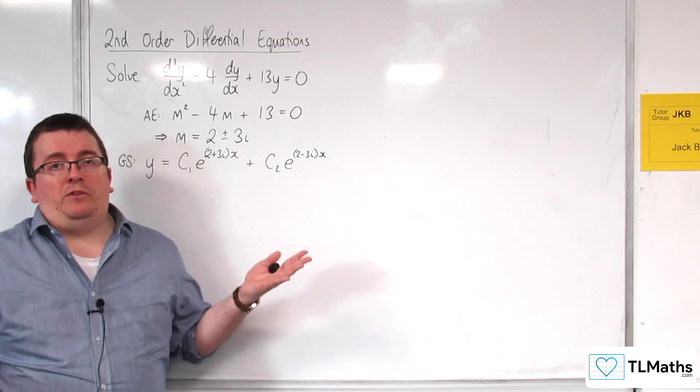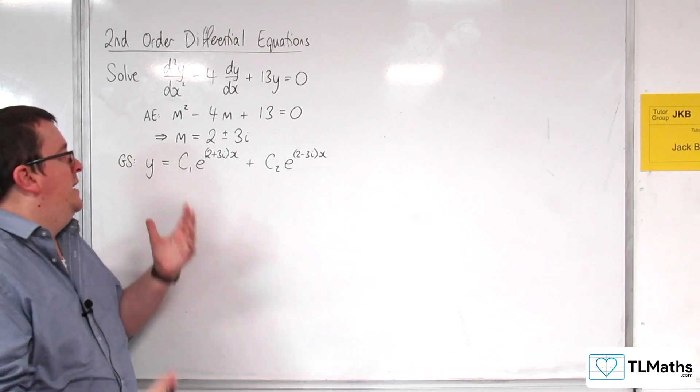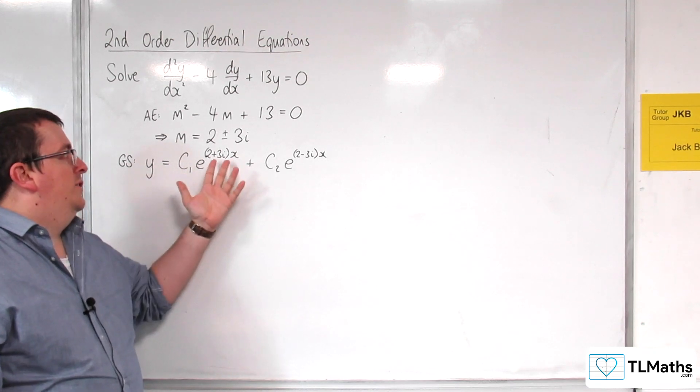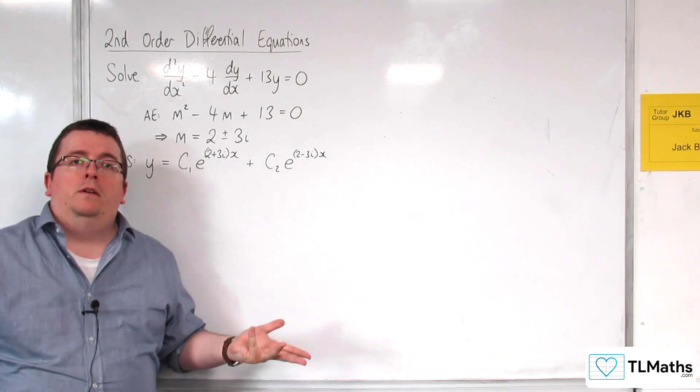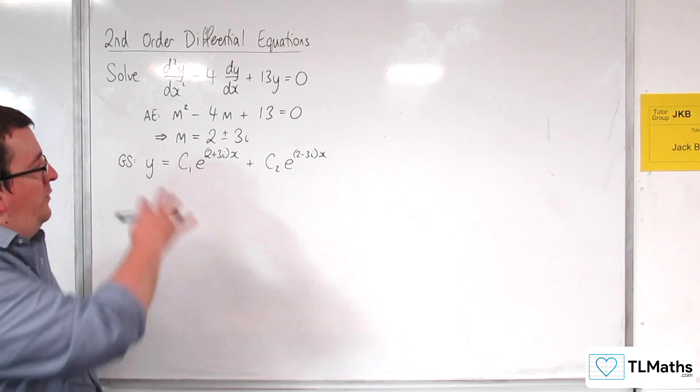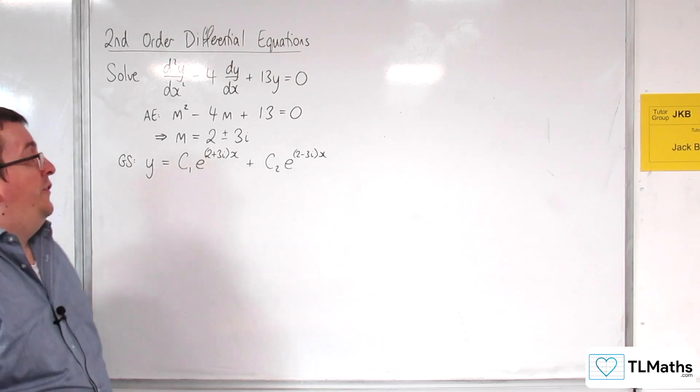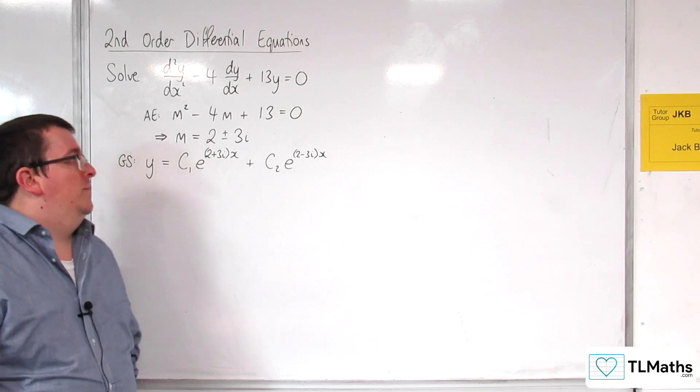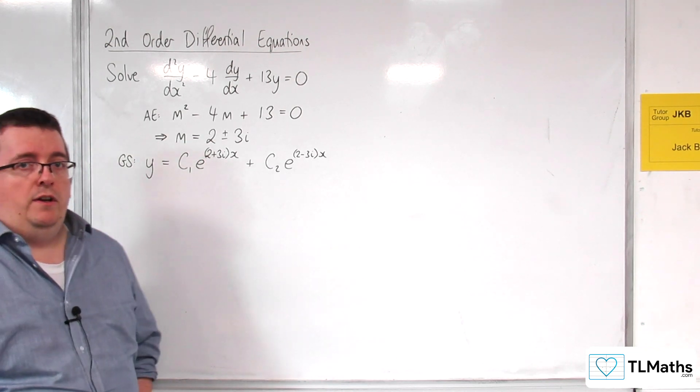Okay, that seems like a logical step to use that, given that we know that c1 e to the power of one of the roots of the auxiliary equation times x should be one of our solutions. So it seems reasonable to assume that. Now this isn't in a particularly nice format, so let's see if we can rewrite it in another way.